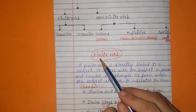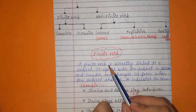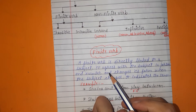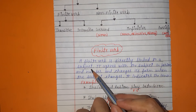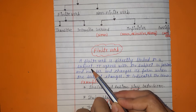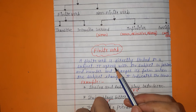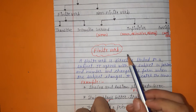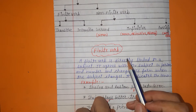First we are doing finite verb. What is a finite verb? A finite verb is directly linked to a subject — this is the main thing you have to keep in mind. I have already told you that there are two parts: subject and predicate, and the predicate part is made up of two components — verb and object. In that predicate part, a verb is always present.